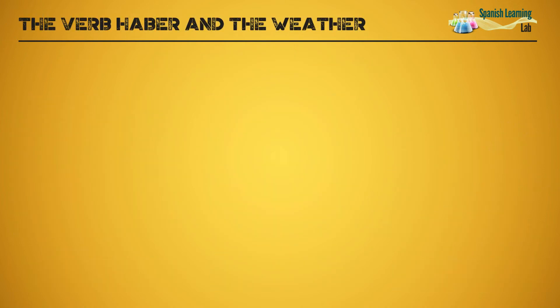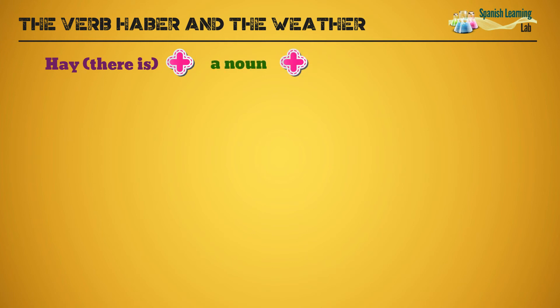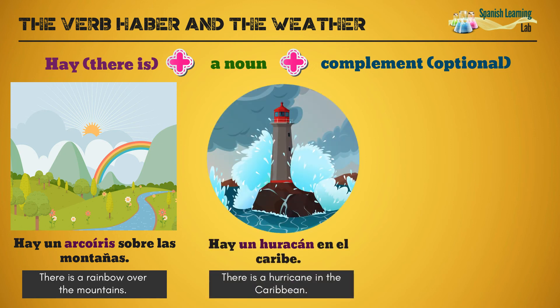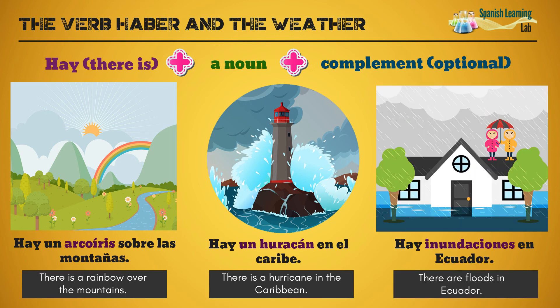The verb haber and the weather. Finally, the verb haber will be used in its hay form, along with a noun related to the weather, following this structure: hay, plus a noun, plus a complement. These are some examples: Hay un arco iris sobre las montañas. Hay un huracán en el Caribe. Hay inundaciones en Ecuador.